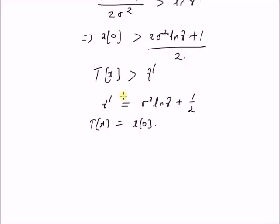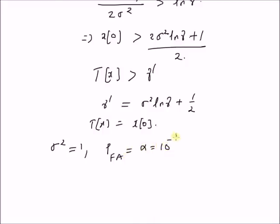Now let us look at the numerical side of this problem. For values given as sigma squared equal to 1 and probability of false alarm equal to alpha equal to 10⁻³, let us calculate the values of the threshold and the probability of detection.